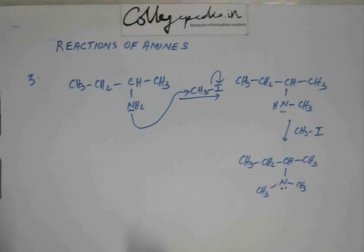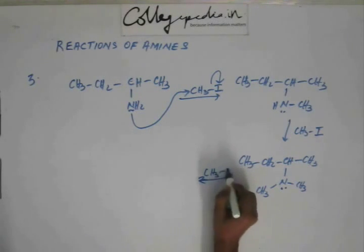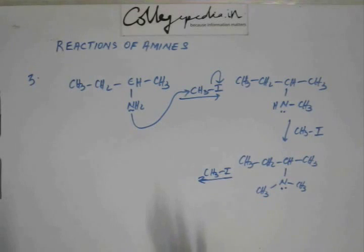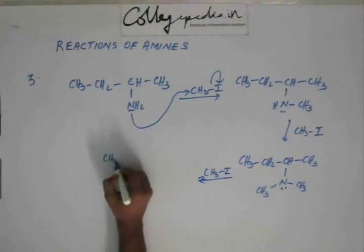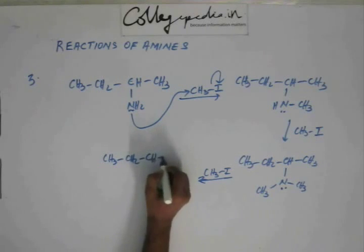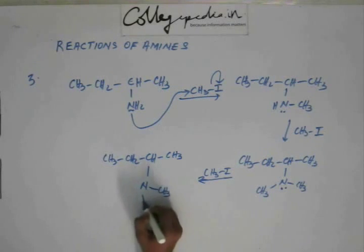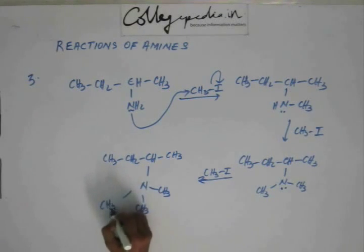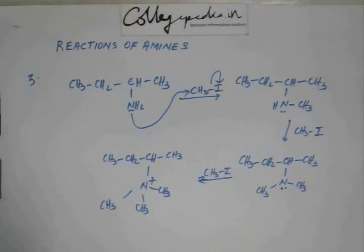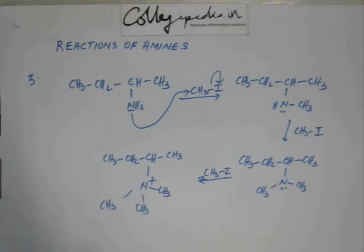If one more methyl iodide comes and there is one more SN2 mechanism, this time nitrogen does not have a hydrogen. So when nitrogen gains a plus charge, it has no mechanism to get rid of this plus charge — it will remain as it is. This is a quaternary ammonium ion, because nitrogen is attached to 4 carbons — it's a 4-degree ammonium ion.